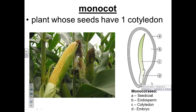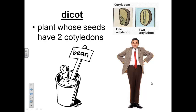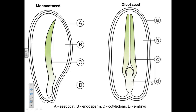Here are parts of a monocot seed that you will be labeling in your notes. A monocot seed, like corn, has one area of stored food. A dicot, such as a bean, has two areas that are easily split apart. Diagrams of the dicot and monocot seed should be labeled in your notes.